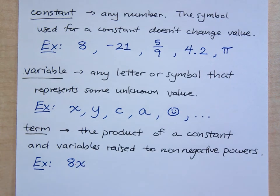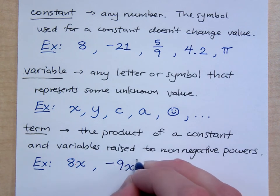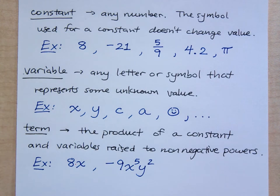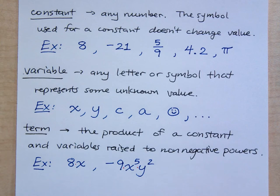We say multiplication is like glue — it's sticky. We can make things really complex: we could say negative 9x to the 5th y squared. It's understood that there's multiplication with all that stuff and it keeps them stuck together — almost as if multiplication is glue. Addition and subtraction keep things separated.